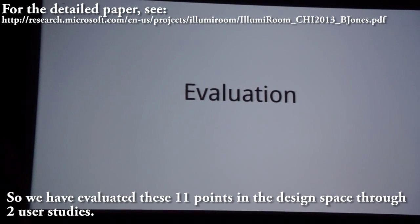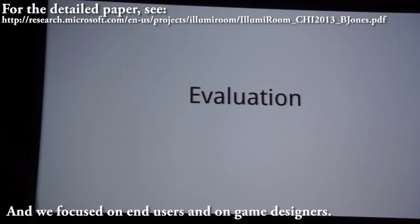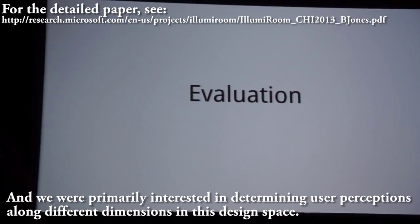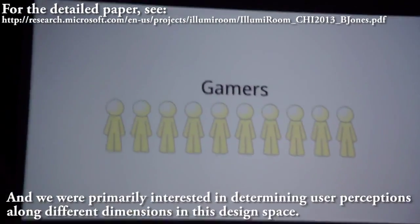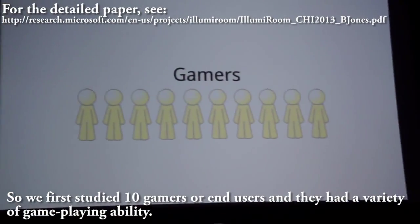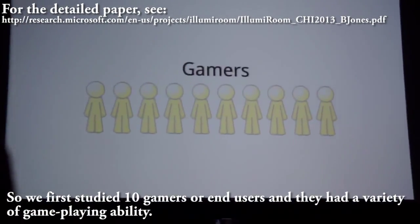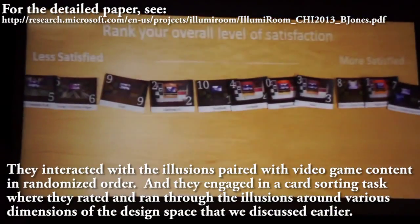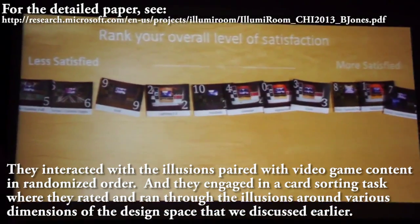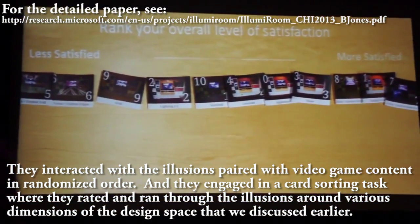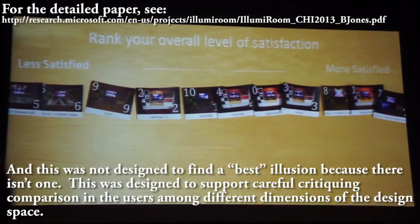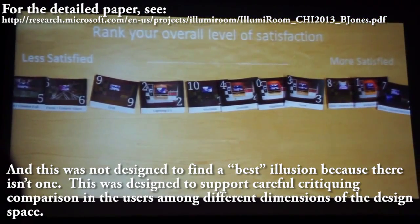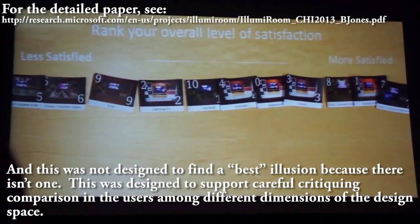We evaluated these 11 points in the design space through two user studies, focusing on end-users and on game designers. We first studied 10 gamers with a variety of game-playing ability. They interacted with the illusions paired with video game content in a randomized order and engaged in a card-sorting task where they rated and ranked the illusions around various dimensions of the design space. This was not designed to find the best illusion — because there isn't one — but to support careful critique and comparison among different dimensions.